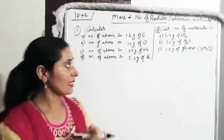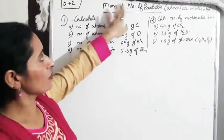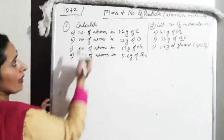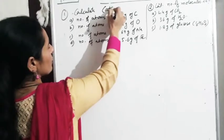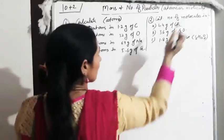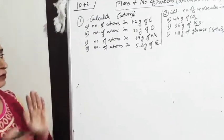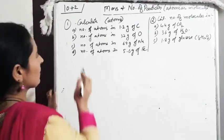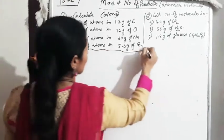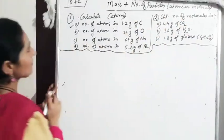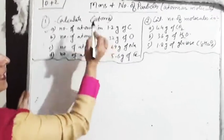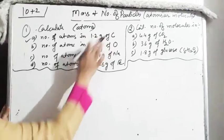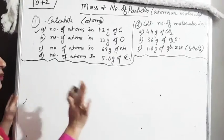Now we will reverse. We will know the relationship of mass and number of particles. We will calculate the number of atoms and the number of molecules — how we calculate them using the mole concept. This is our assignment today: Calculate number of atoms in 1.2 gram of carbon.